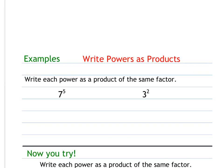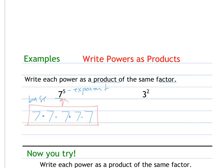Let's try some. For the first target, we're going to write powers as products of the same factor. Remember, product means multiplication and factor is one of the digits in multiplication. If our base is seven and our exponent is five, that tells us we're multiplying the base of seven times itself five total times. For three squared, the base is three and we multiply three by itself two times.